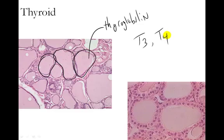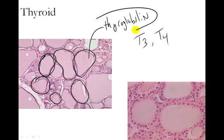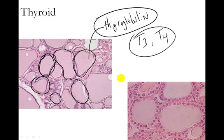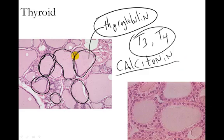The thyroid gland is really unique because it has these organized compartments called thyroid follicles. These follicles are filled with a substance called thyroglobulin, which is the storage form of the two main thyroid hormones, T3 and T4, named for the number of iodine atoms in the molecule. The thyroid also produces a hormone called calcitonin, which is a calcium regulator. Calcitonin causes bones to uptake more calcium, decreasing the amount of calcium in the blood and increasing the amount in your bones.